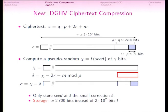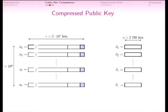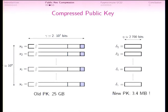We can do the same for the full public key. Instead of storing all the huge elements of 20 million bits, we only store the corrections delta. So instead of 25 gigabytes of public key, we get a public key of 3.4 megabytes — a significant compression.